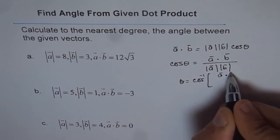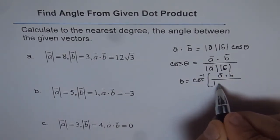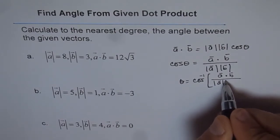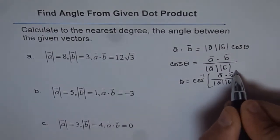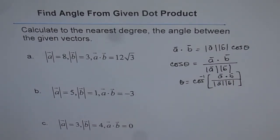And theta will be cos inverse of all this. That is, if dot product is known to us, we know the numerator, and the magnitudes are known to us, so we know the denominator. And we can always find cos inverse of a real number and get the real answer.